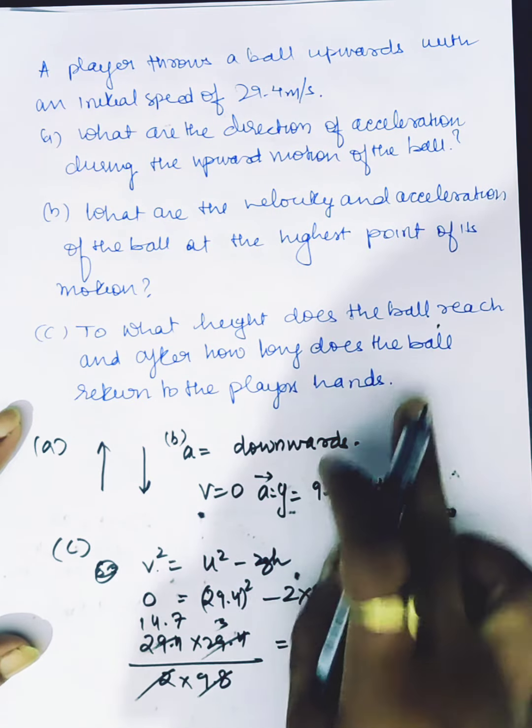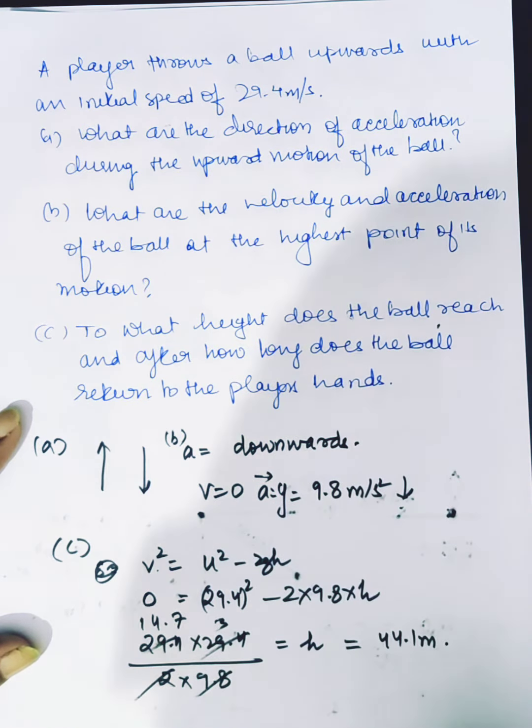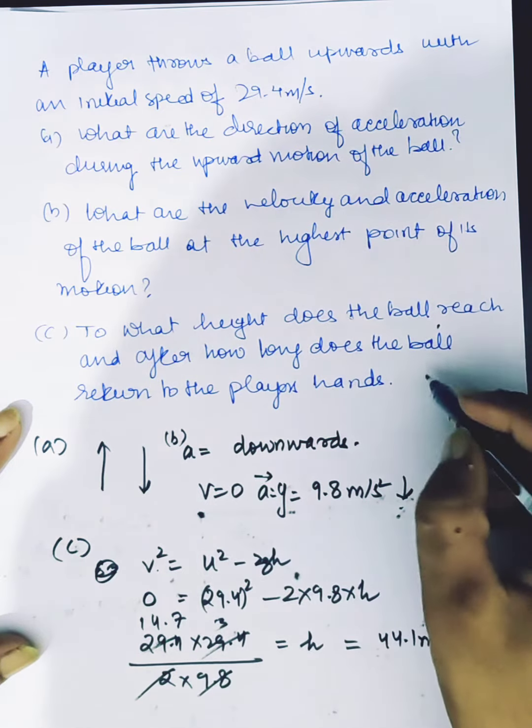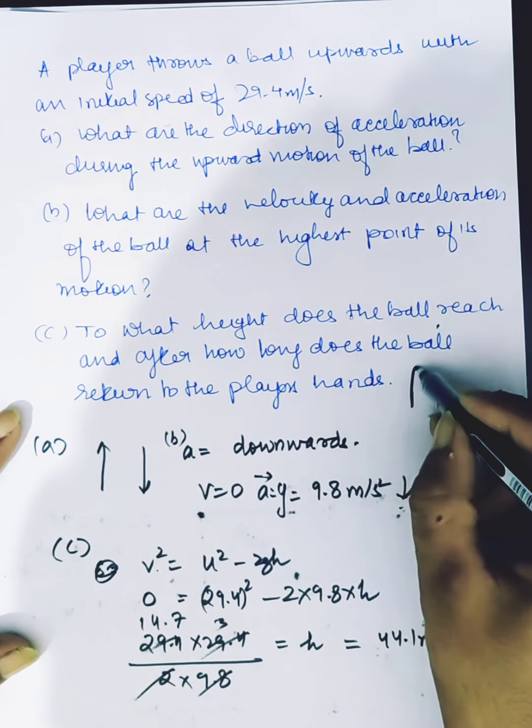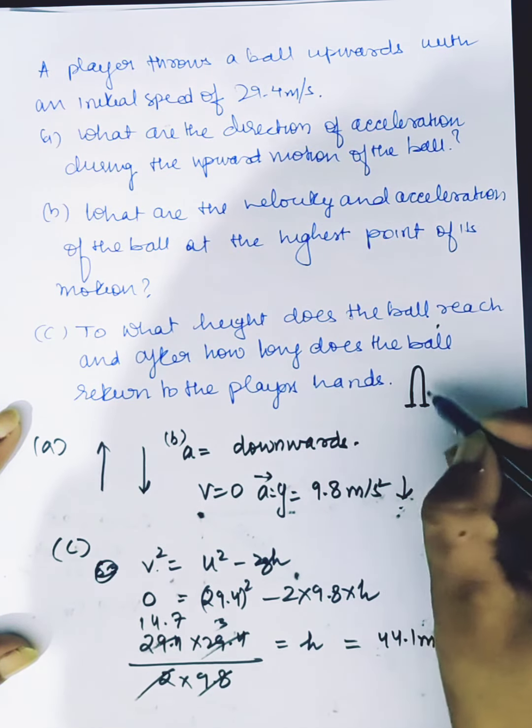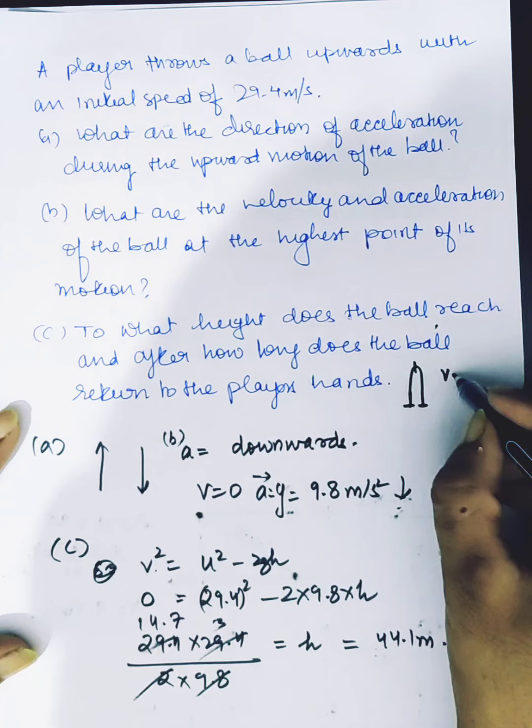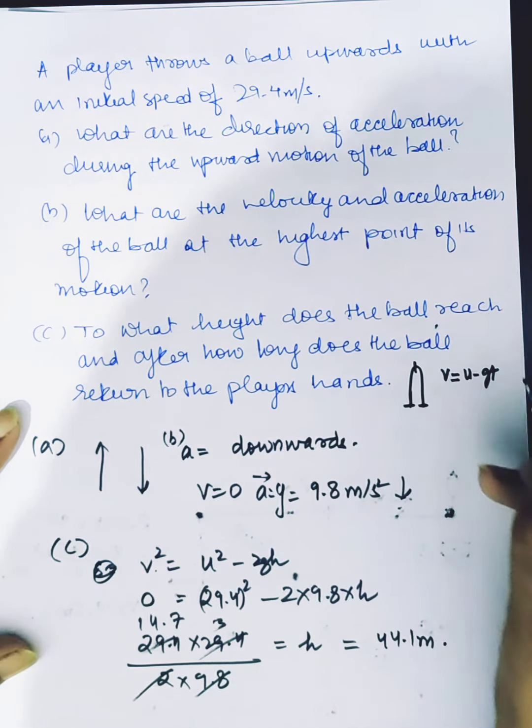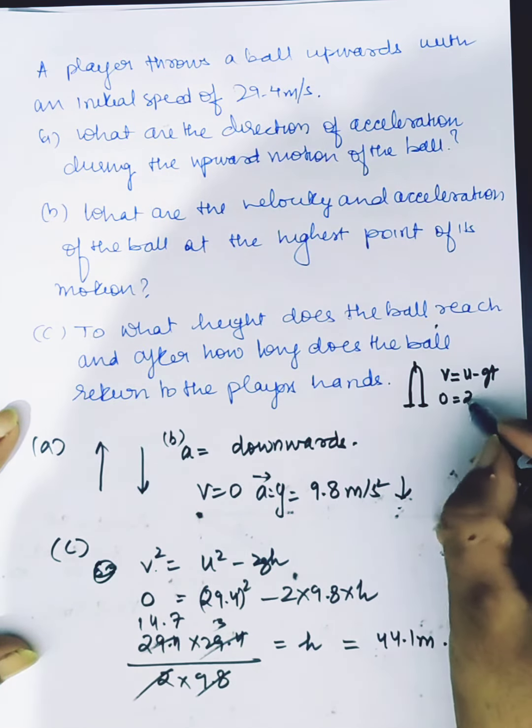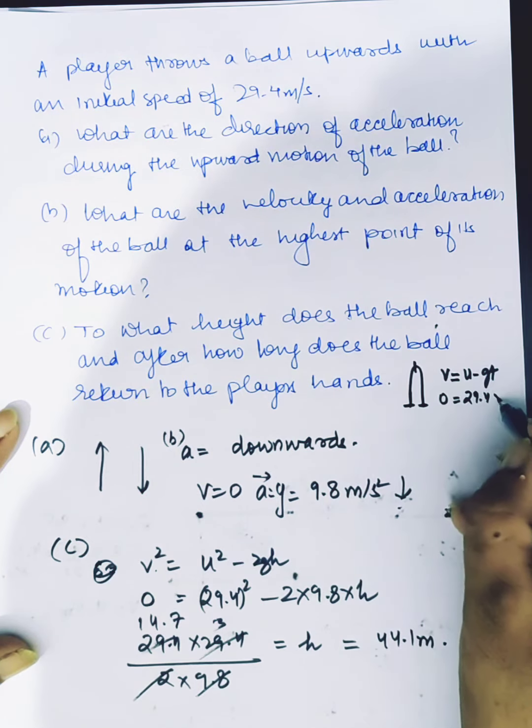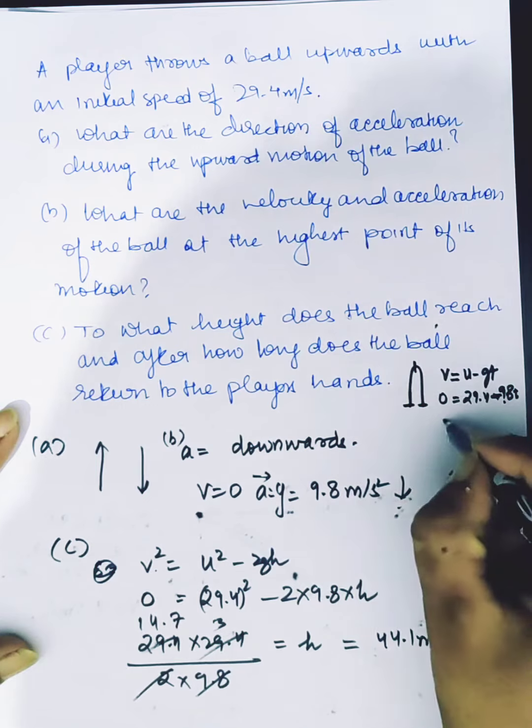Now, how long does the ball return to the player's hand? Time to go up and come down is double. Using v = u - gt, 0 = 29.4 - 9.8t, so time going up is 3 seconds.